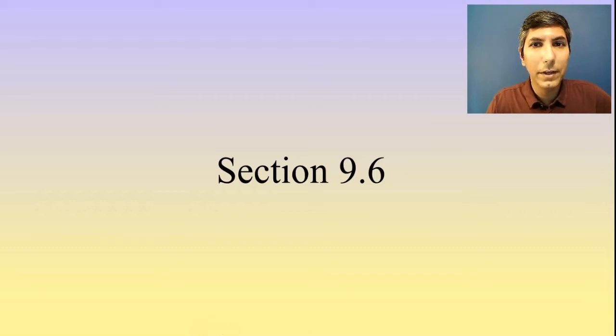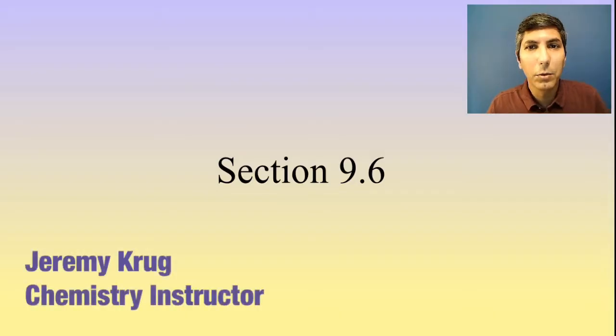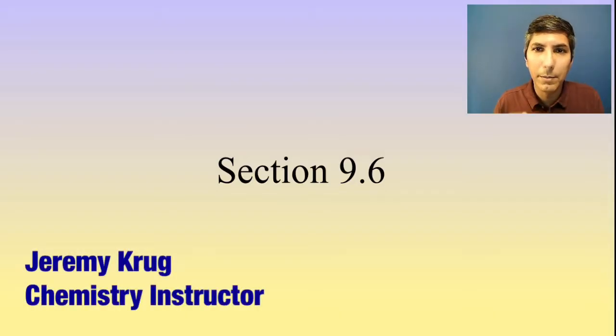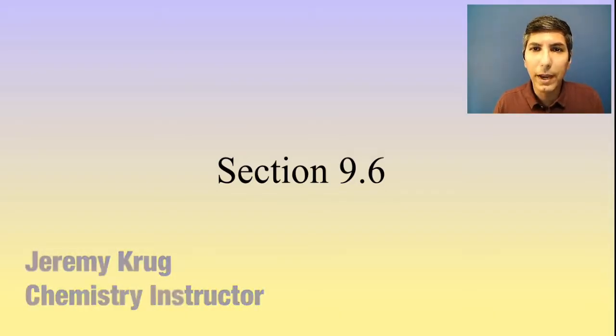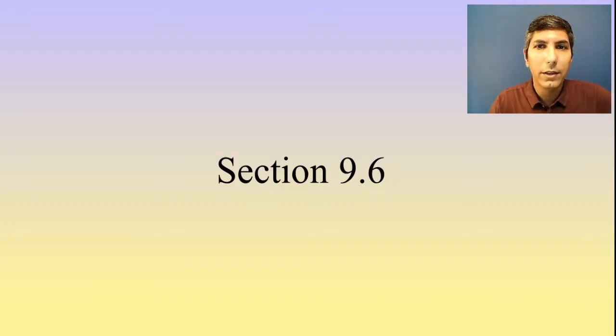Hi there, I'm Jeremy Krug, and in this video we're going to take a look at AP Chemistry Unit 9, Section 6, which is about how we can manipulate chemical reactions and what effect that has on its thermodynamic favorability. So if you haven't subscribed yet, go ahead and subscribe. That way you'll have access to all my review videos and AP daily lessons as well.